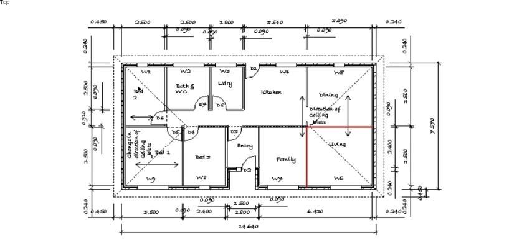Welcome back to Buildsum. This is presentation 8 in the series on Australian Standard 1684.2, the Timber Framing Code. What you're looking at here is a floor plan of the building that we're basing these programs on. In this video I'm going to run through some preliminary calculations that you're going to need to do in order to work out the timber sizes for your roof.